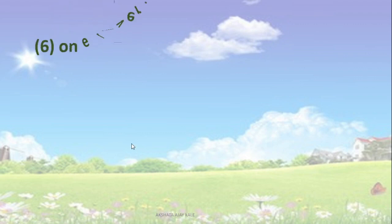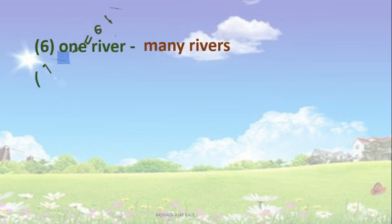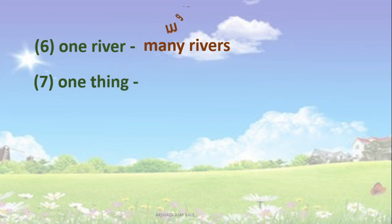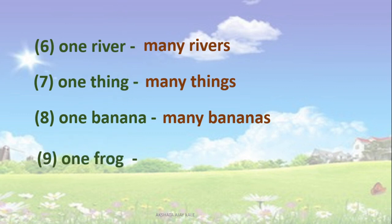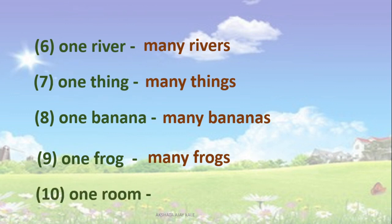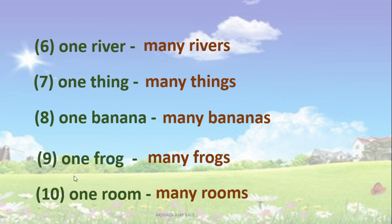Sixth one: One river — many rivers. Next: One thing — many things. One banana — many bananas. One frog — many frogs. One room — many rooms. We will repeat once again: One river, many rivers. One thing, many things. One banana, many bananas. One frog, many frogs. One room, many rooms. Got this, children?